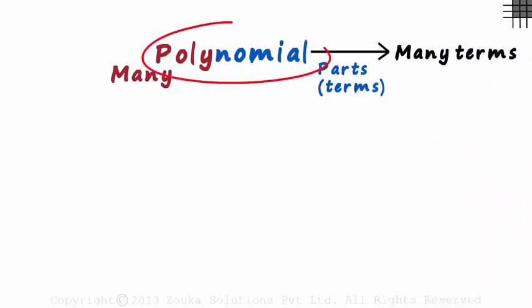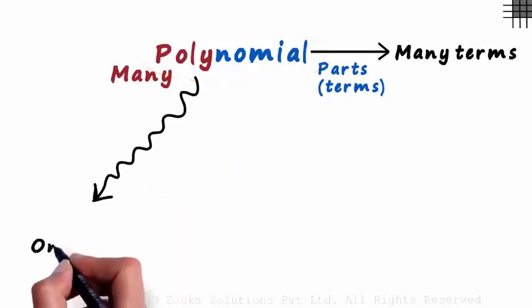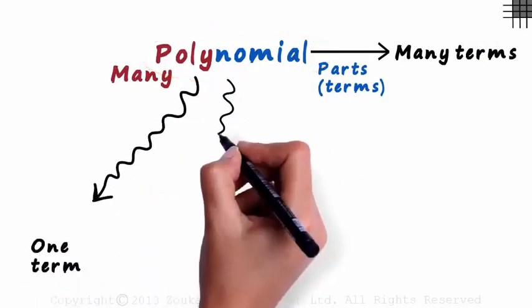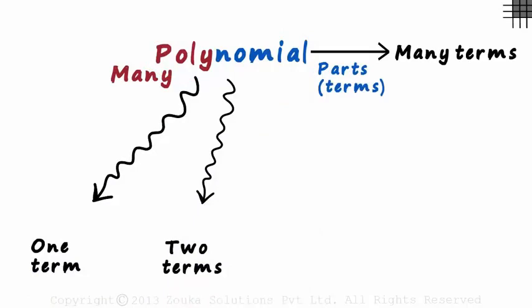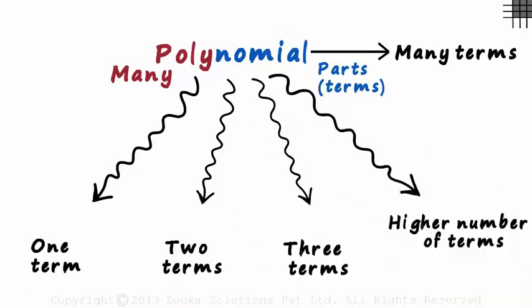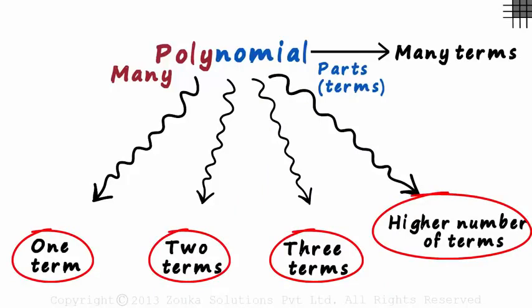There are different types of polynomials. A polynomial can be an expression with just one term, or two terms, or three terms, or maybe even a greater number of terms. All these categories come under one roof, which is the polynomial.